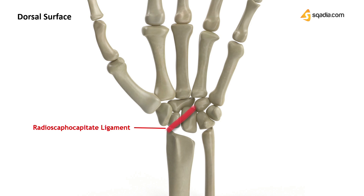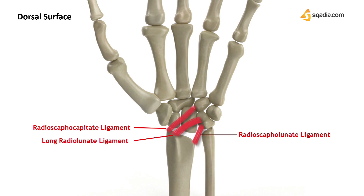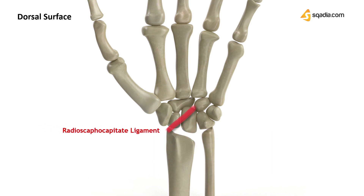The four parts are: the Radioscaphocapitate ligament, the Radioscapholunate ligament, the Long Radioscapholunate ligament, and the Short Radioscapholunate ligament. As the name indicates, the Radioscaphocapitate ligament involves the radial, scaphoid, and capitate bones. The lateral side of the joint capsule is formed by this ligament, going towards the styloid process of the radius. It also extends a few fibers towards the trapezium bone, forming the carpal ligament through the lateralmost borders.